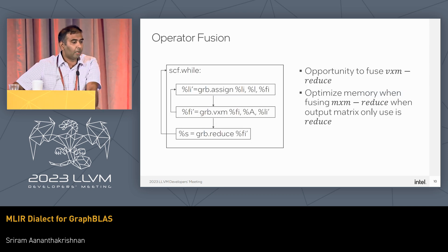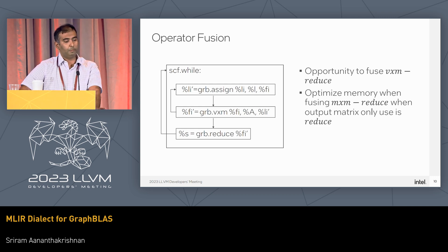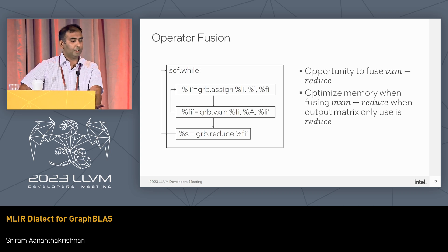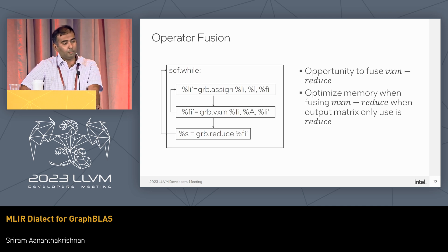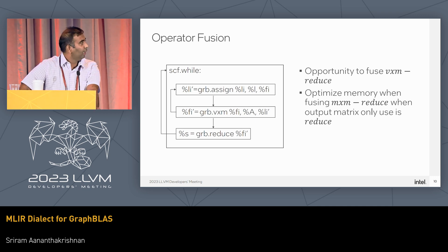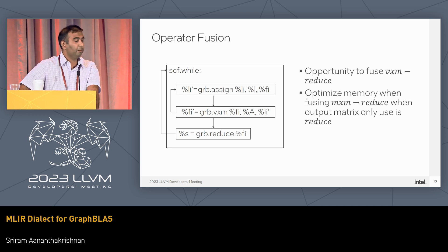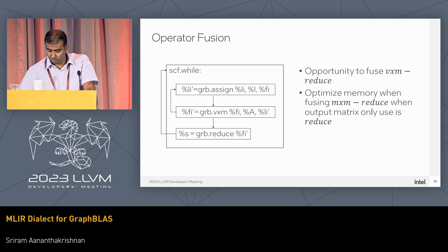Here are a couple of opportunities for fusing GraphBLAS ops. This is a dataflow graph you'd see in breadth-first search: all these GraphBLAS operations execute in a loop, assign produces a sparse tensor used as a mask in VXM, VXM produces a sparse tensor used by reduce and also by assign in the next iteration. Looking at this pattern, we can fuse VXM and reduce together and compute the reduction as we compute VXM. And if it's an MXM followed by a reduce, and reduce is the only consumer of MXM, we don't even need to allocate the output matrix for MXM.